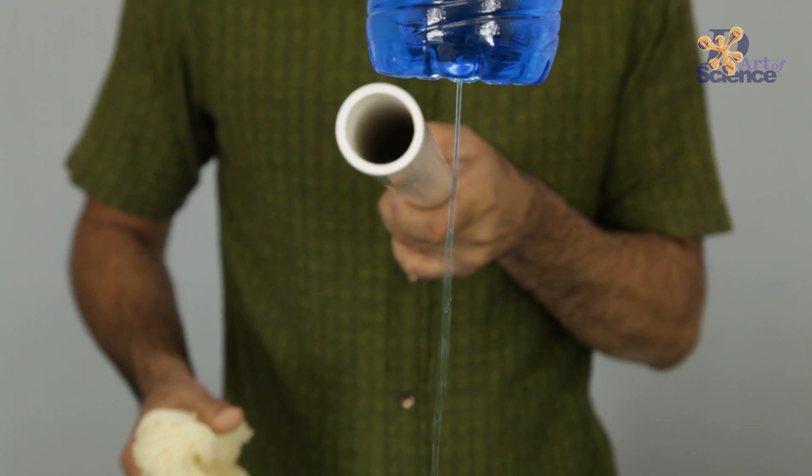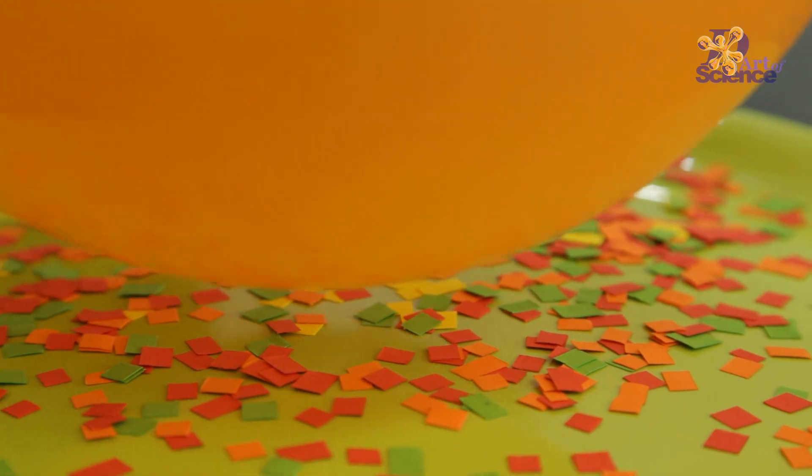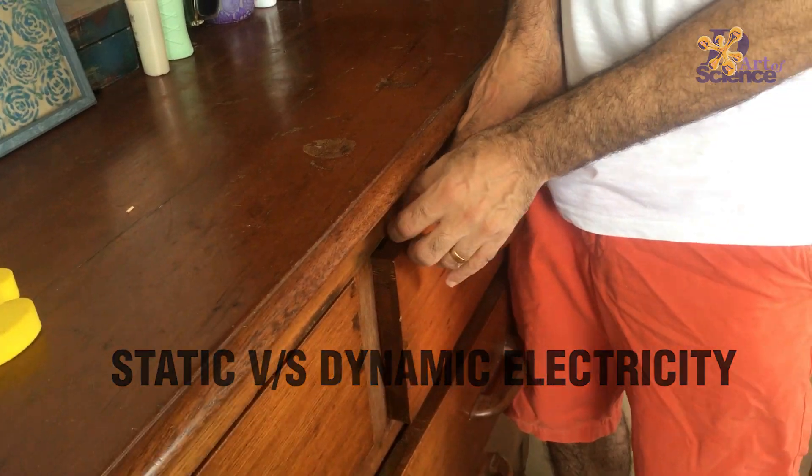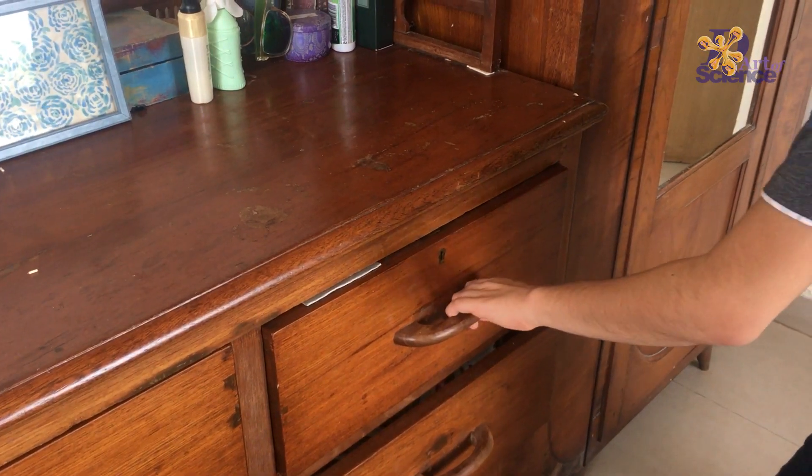Today's video will discuss the two main types of electricity: static electricity and dynamic electricity. But before we do that, we must first understand the basics of what electricity is.